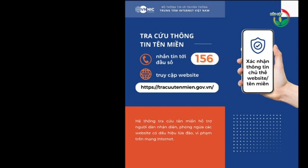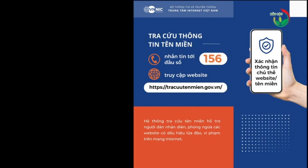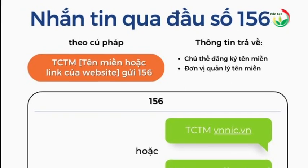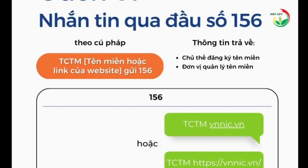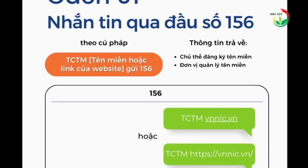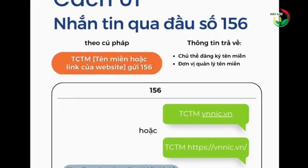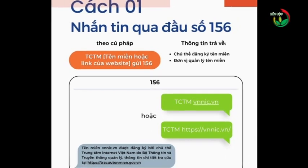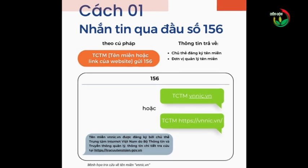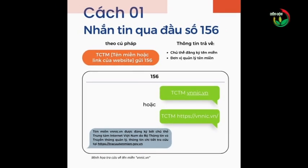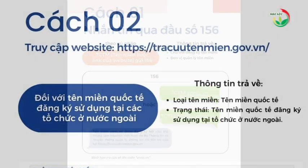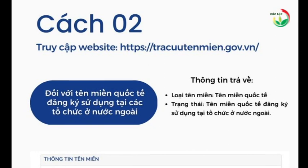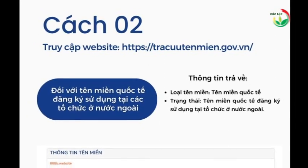Kể từ ngày 1 tháng 3 năm 2023, người dân đã có thể tra cứu thông tin tên miền miễn phí bằng cách nhắn tin qua đầu số 156. Trước khi sử dụng dịch vụ giao dịch trên Internet, người dân, tổ chức, doanh nghiệp có thể tra cứu thông tin website tên miền bằng cách thực hiện nhắn tin miễn phí tới tổng đài 156 hoặc tra cứu trực tiếp tại website https://tracuutenmien.gov.vn. Hệ thống tra cứu sẽ giúp người sử dụng xác định loại tên miền, tên chủ thể đăng ký sử dụng, nhà đăng ký quản lý tên miền. Cổng thông tin tra cứu tên miền là công cụ hỗ trợ hiệu quả trong việc xác định nguồn thông tin chính thức, góp phần phòng ngừa và ngăn chặn các hành vi lừa đảo, vi phạm pháp luật liên quan đến việc sử dụng tên miền trên môi trường mạng.